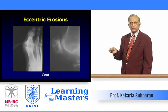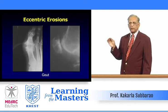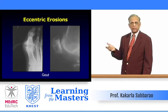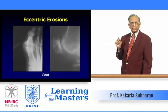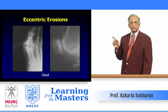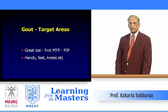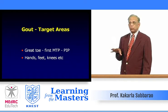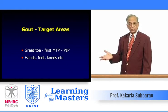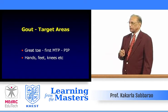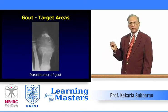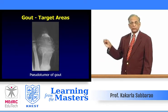In gout, the gouty tophus will erode the synovium with synovial hypertrophy. The important radiographic feature is the overhanging margin with the erosion. When a patient presents with a swollen interphalangeal joint with an erosion showing an overhanging margin, the immediate diagnosis is gout. Gout may involve the patellofemoral joints and bones. Target areas include the great toe — called podagra — first MTP and PIP joints, hands, feet, knees, and occasionally sacroiliac joints and spine.